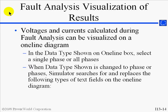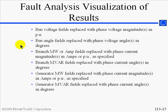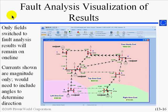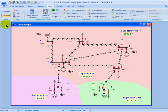Then we demonstrated how voltages and currents for different phases can be visualized on the one-line diagram. The next slide shows how the flows and field values are replaced on the one-line diagram to reflect the fault quantities. This is the example of visualizing the bus fault at bus 3. In Simulator, if you are visualizing the faults on the one-line diagram, you can also toggle between phases using the drop-down on the Fault Analysis button on the Tools ribbon.